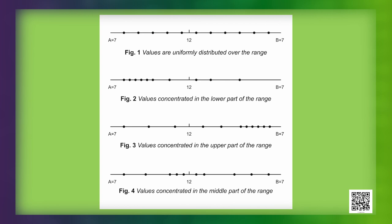Suppose the largest value of x is b and the smallest value of x is a. The range is equal to b minus a, which is the total range of x. A large range indicates that the values are spread over a large interval. A small range indicates smaller variation in the values of x. Thus, the range is a measure of variation or dispersion of x. However, it is a rather crude measure of variation.